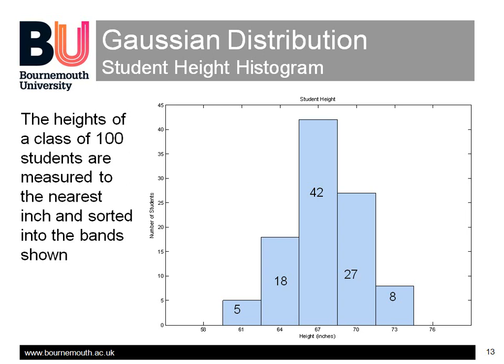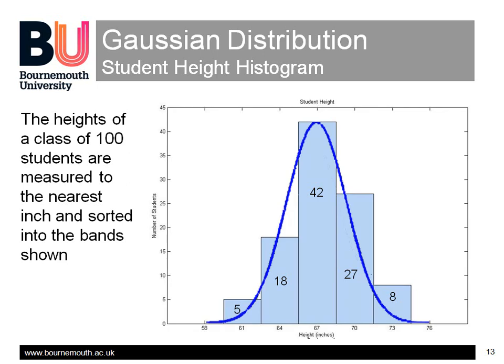Here, the height and area of each individual rectangle represents the number of students in each height range, and as a percentage of the total, the probability of a student being in that height range. It's not exactly bell-shaped, but infinite measurements with infinitesimally thin height bands should approach it.